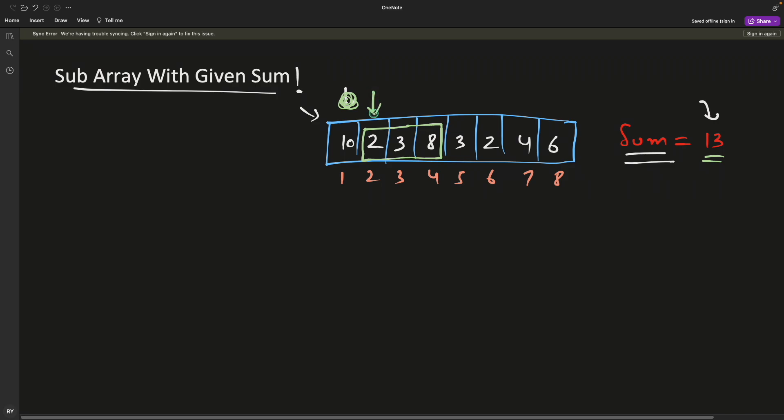You will fix this starting point and increase the window till this window's elements sum is less than the target. If it is less, you will keep on incrementing the window size. Once you find out that it is not equal but greater than the sum, then you will discard the first element and you will increment that window again.